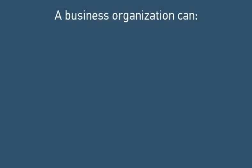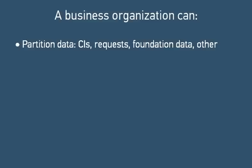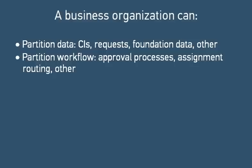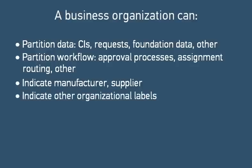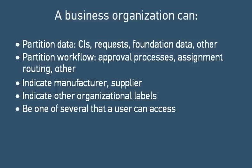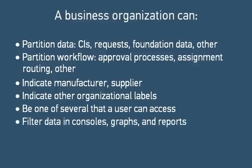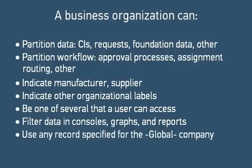Before looking at configuring companies and organizations, let's review the ways that they're used in ITSM and SLM. Many kinds of data, including CIs, requests, and foundation data, are partitioned by company. Workflow, such as approval processes and assignment routing, is also partitioned by company. Some records use companies as manufacturers and suppliers, and companies or full organizational structures are also used for other labels, such as the organization impacted by an incident. Some users have access to more than one company and can filter the data in various displays to show a particular one. Any record with a company field set to Global applies to all companies.